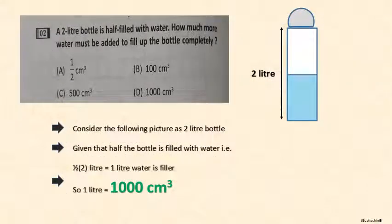In this question they have mentioned a 2 liter bottle is half filled with water. So half of 2 liter is 1 liter. 1 liter when converted into centimeter cube is equal to 1000 centimeter cube. So 1000 centimeter cube of water must be added to fill up the bottle completely.